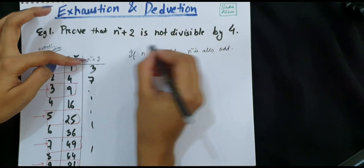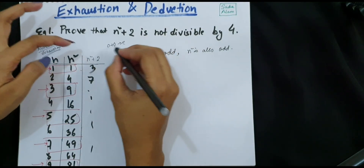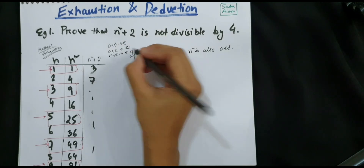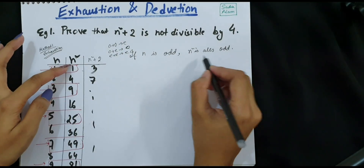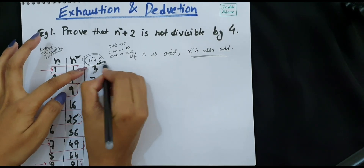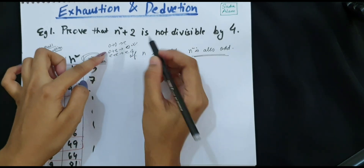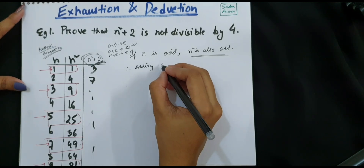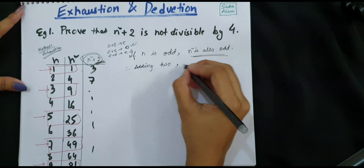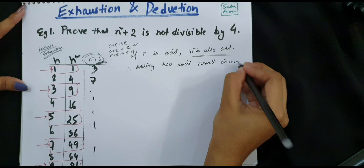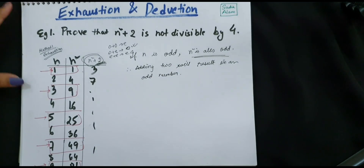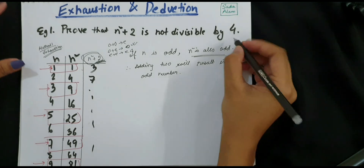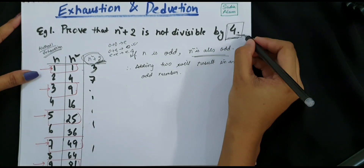If we add two odd numbers the result is even; if we add an odd and even the result is always odd; two even numbers result in even. Since n squared is odd and we are adding 2, which is an even number, adding an odd and even will always result in an odd number. Therefore n squared plus 2 results in an odd number.